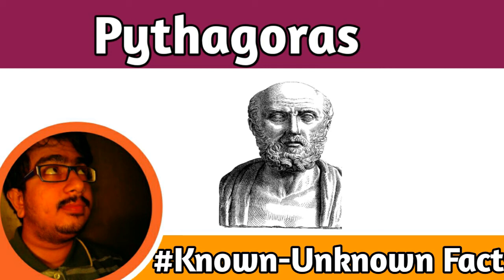The famous astronomer Copernicus described Pythagoras as a forerunner of the suggestions put forward by him — that Earth and other planets rotate in orbit around the Sun. In 493 BC, Pythagoras died at the age of 83. With this we end the session, and I will meet you all in the next episode.